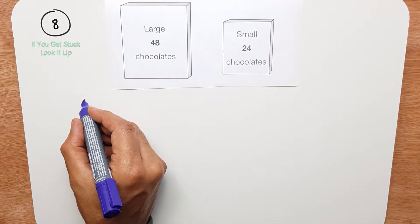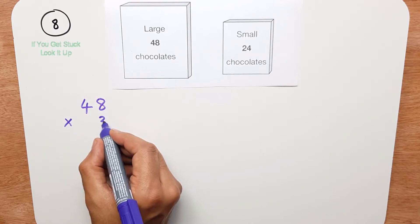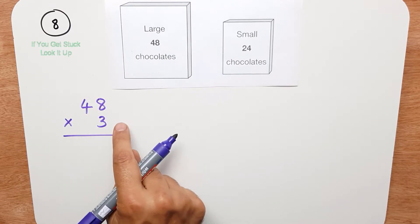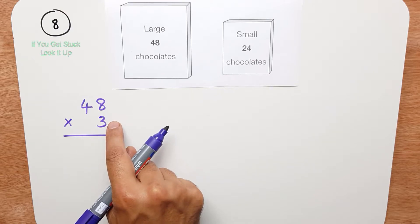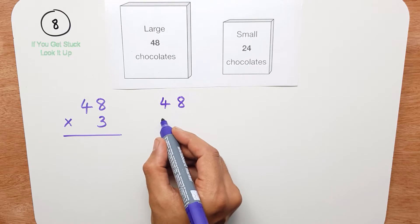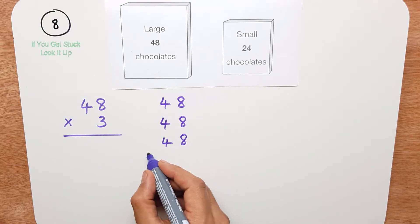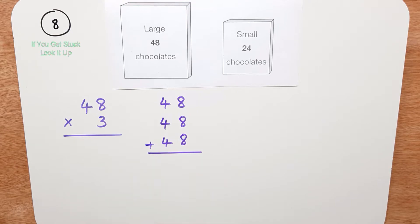So step 1 would be to do 48 times 3. I can do it that way, because there's 3 boxes, or I can do it this way, 48 add 48 add 48. Now you can decide which way, so let me try it both ways.